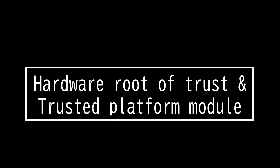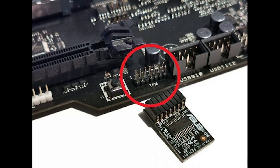This video is on hardware root of trust and trusted platform module. A hardware root of trust stores the keys used for cryptographic functions and allows for a secure boot process. It is needed to ensure computers boot with legitimate code, and it basically checks if that code has been verified as legitimate.